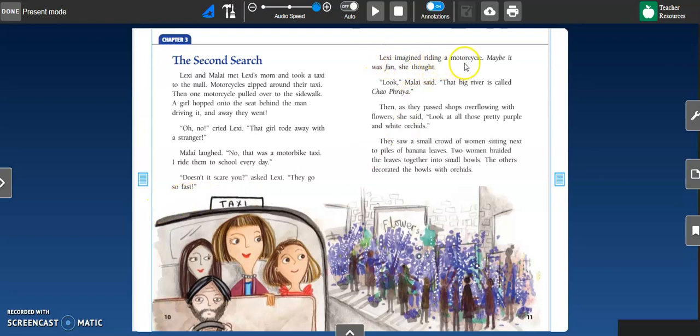Lexi imagined riding a motorcycle. Maybe it was fun, she thought. Look, Malay said. That big river is called Chaufraya. Then, as they passed shops overflowing with flowers, she said, look at all those pretty purple and white orchids. They saw a small crowd of women sitting next to piles of banana leaves. Two women braided the leaves together into small bowls. The others decorated the bowls with orchids.